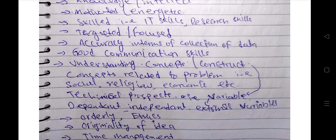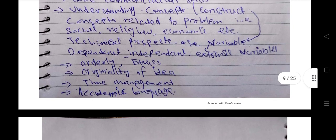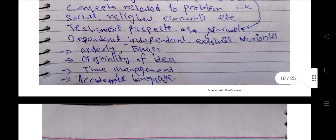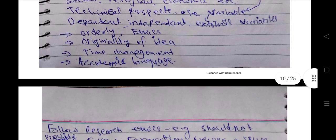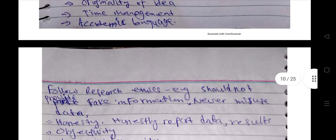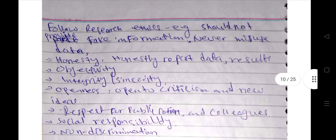Apart from that, understanding concepts and constructs of research. I will discuss what concepts and constructs are in your research, the technical perspectives. A researcher should be orderly, and research ethics are there. Then originality of your idea is very important, genuine content, time management skills, academic language, use of academic writing. Research is something that is academic, so academic writing is very important, writing skills of researcher. You have to follow research ethics, and I think research ethics is a broad and very important topic to be discussed separately.